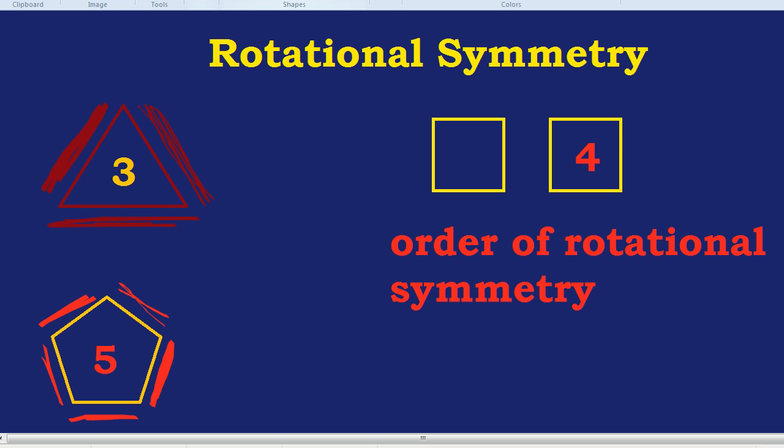We're going to get a little bit harder now. How about this arrow here? What is that arrow's order of rotational symmetry? Two, perhaps? Because it has at least one line of symmetry.